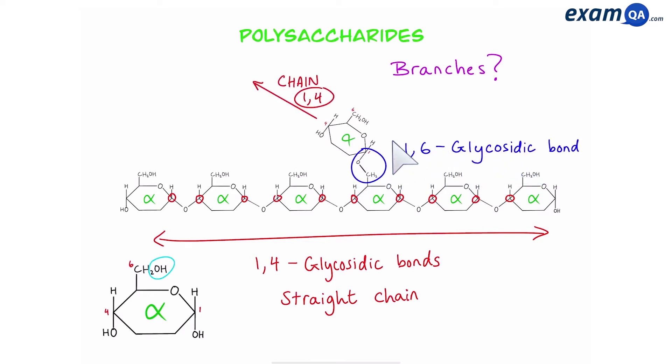The rest of the chain if it's a straight chain it'll just be 1-4 glycosidic bonds. So remember 1-4 makes a straight chain, 1-6 makes the branch point and only the point, and the rest of the chain will still be 1-4.